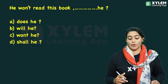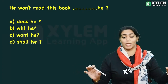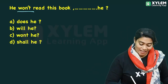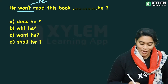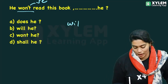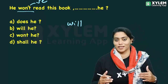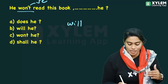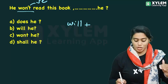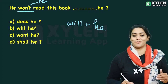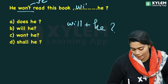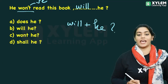Next: 'He won't read this book.' 'Will not' makes it negative, so the tag should be positive. The auxiliary verb is 'will,' and the subject is 'he.' So the tag will be 'will he.' Next: 'He has written five letters' — 'has' is the auxiliary verb and the pronoun is 'he,' so the tag is 'hasn't he.'